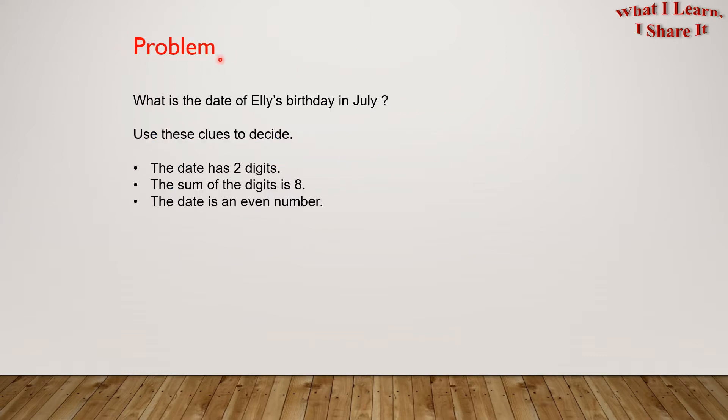Here is the problem to help us understand the strategy. What is the date of Ellie's birthday in July? Use these clues to decide: The date has two digits. The sum of the digits is 8. The date is an even number.